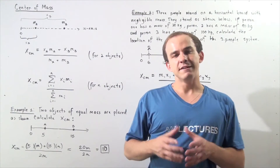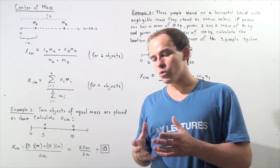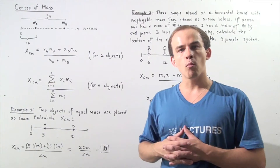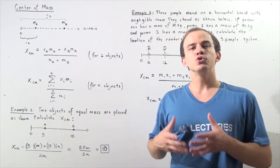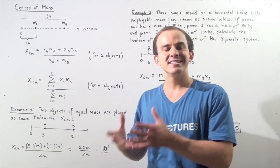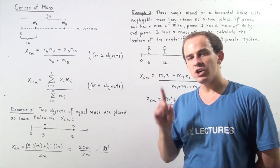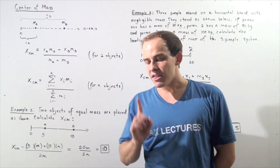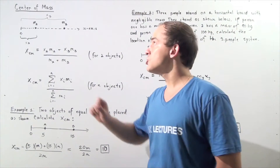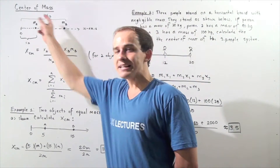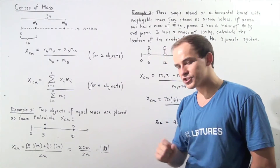Very often in physics, we are dealing with a system of two or more objects, and it is often convenient to treat that system of multiple objects as being one single object. That often requires the calculation of the center of mass of our system of objects.